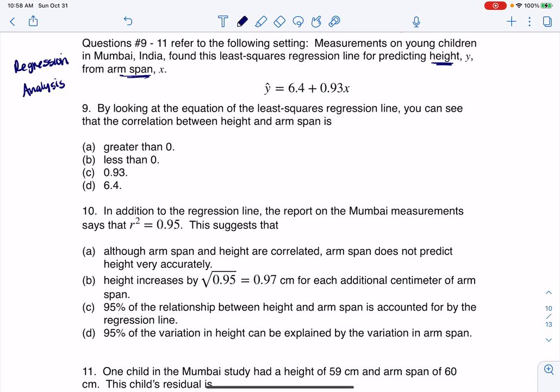I'm just going to put a little side note here. We had two numerical variables. So it says by looking at the equation of the LSRL, you can see that the correlation between height and arm span is blank. Well I didn't actually give you the correlation, but I can look at the slope here. I want to emphasize that the slope is positive.